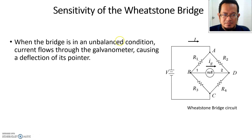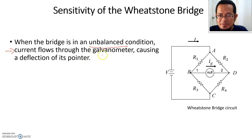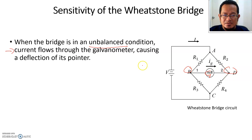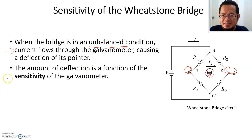We talked about Wheatstone Bridge under balanced condition in our previous lecture video. Now when the bridge is under unbalanced condition, that is when there is current flow through the galvanometer, which will cause the deflection of the pointer. When there is current flowing through few milliamps or few microamps, depending on the voltage of B and D, the bridge is no more under balanced condition. The amount of deflection is a function of sensitivity.